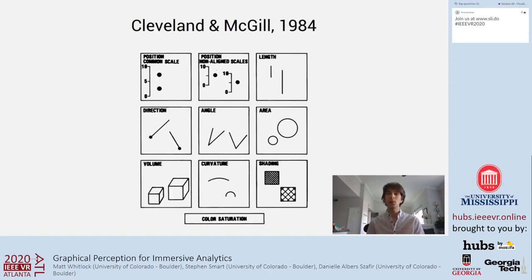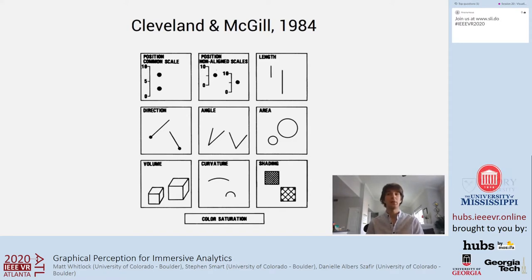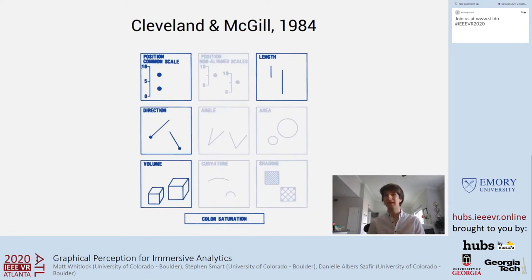Revisiting Cleveland and McGill's work on graphical perception, we took a similar approach of exploring visual channels, considering five of the channels they studied: position, length, direction, volume, and color, and how effective they are in immersive environments.